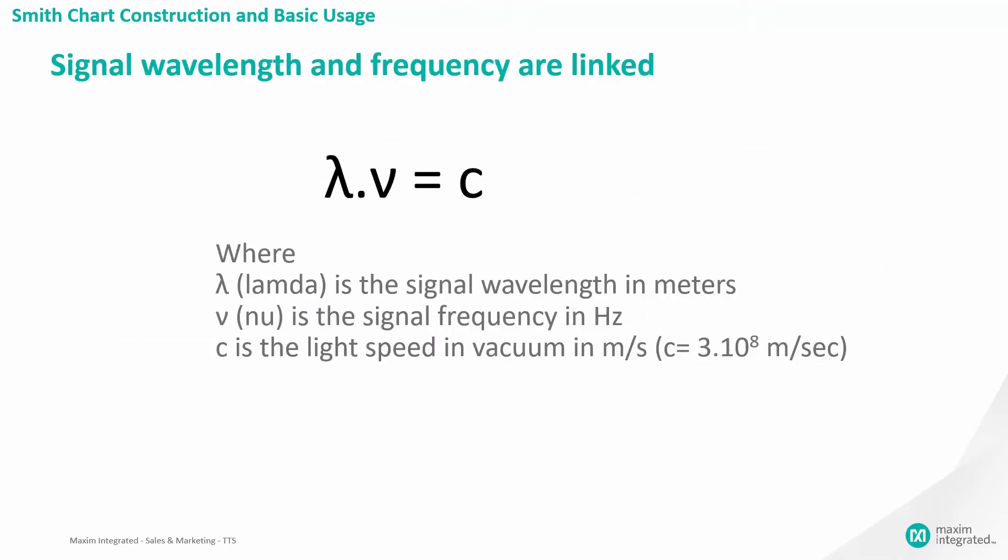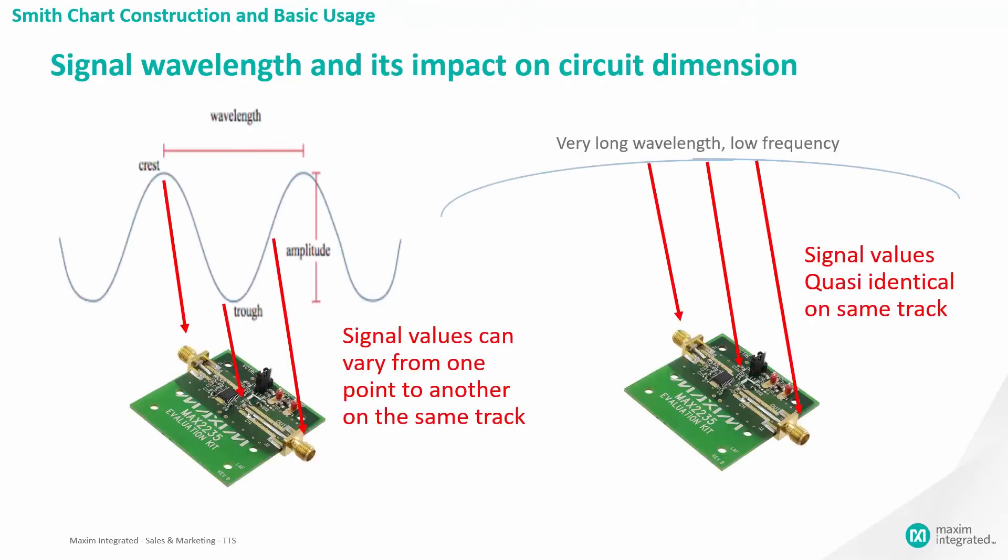When a signal is in DC or a low frequency, the wavelength is long, even greater than a few kilometers. In these cases, there is no noticeable difference in the signal along a conductive path in a PCB, which is usually tens of centimeters. The situation changes when the signal is in a high frequency. The wavelength becomes in the same order of magnitude as the distance between devices on a PCB.